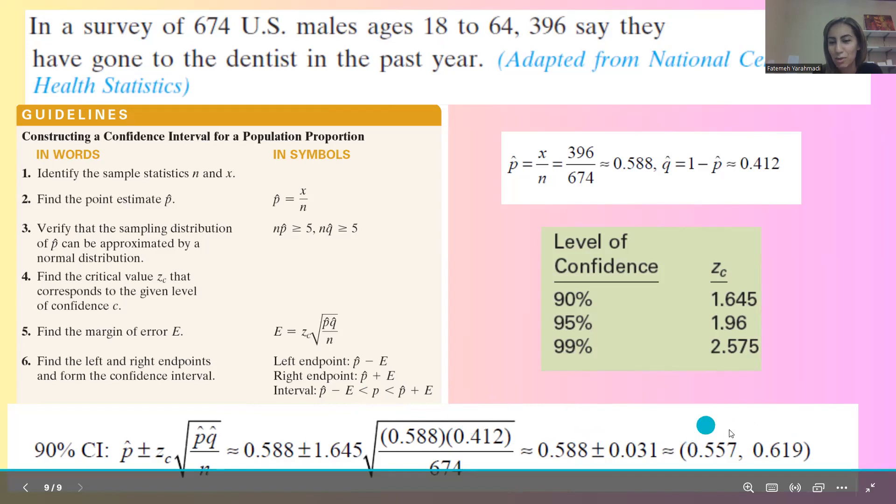So 0.588 plus minus 0.031 is the lower bound and the upper bound. The lower bound is 0.557 and the upper bound is 0.619.